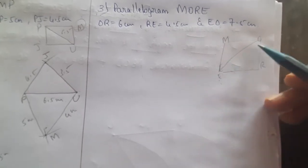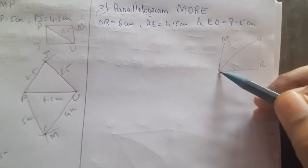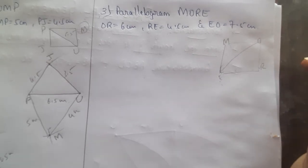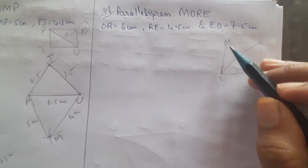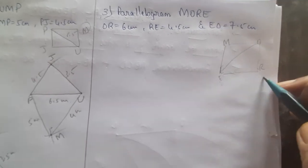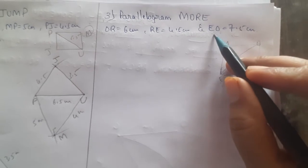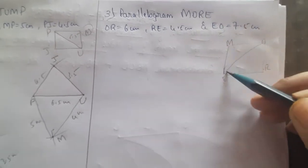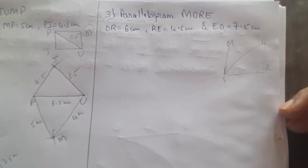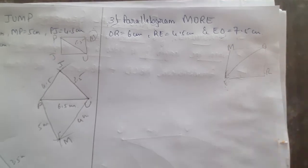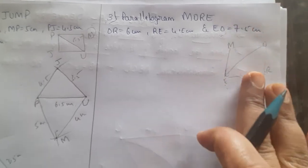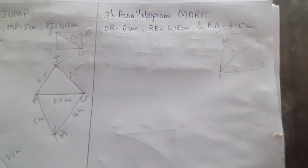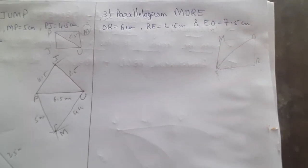Either O-E or M-R can be drawn as the diagonal. The diagonal given to us is O-E. So we shall first construct that triangle and then go to the construction of the parallelogram.